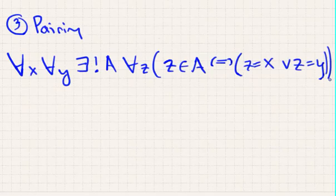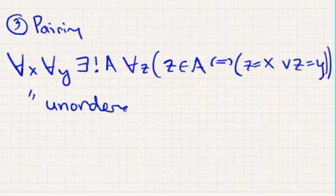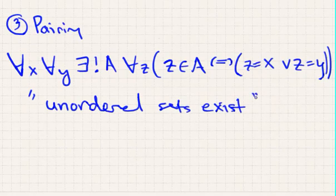Now, this is also claiming the existence of a set. So this is claiming that unordered sets exist. This is slightly different from the empty set axiom, which claimed the existence of the empty set. This is different because this is a way to generate new sets from old ones.